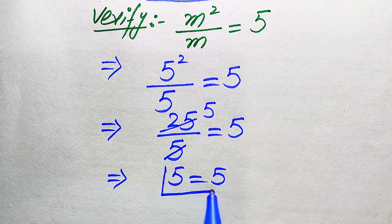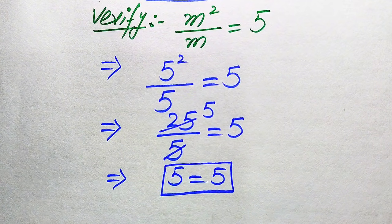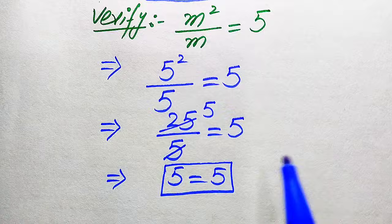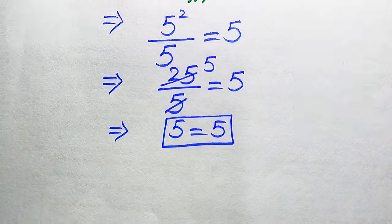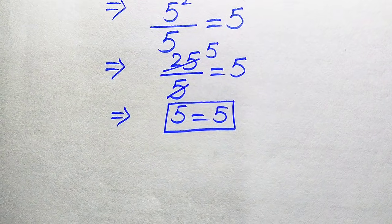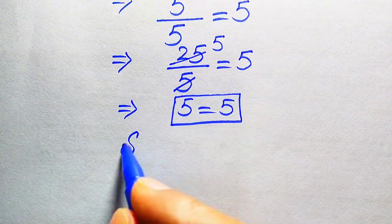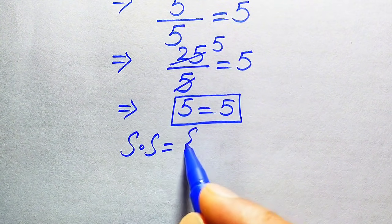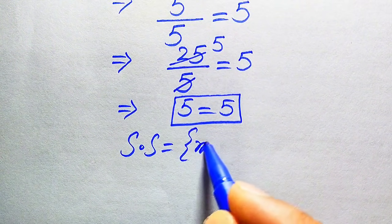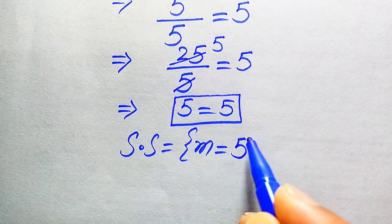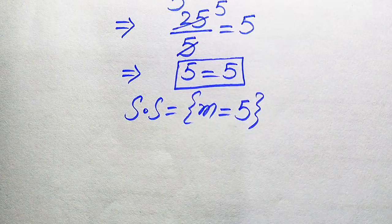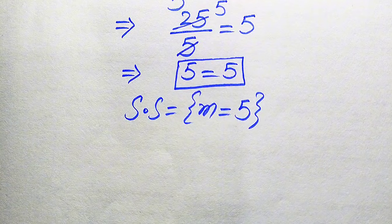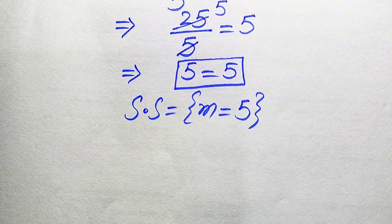Both sides are equal, which confirms that m equals 5 satisfies the given equation. So the solution set from the first method is m equals 5. Now we solve this problem using the second method.